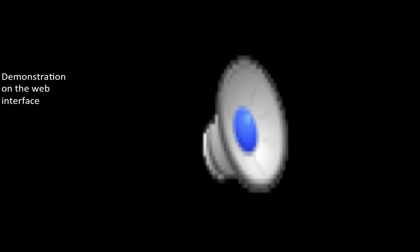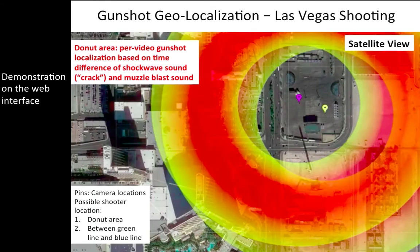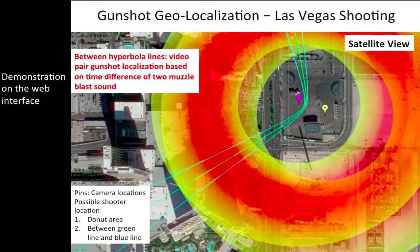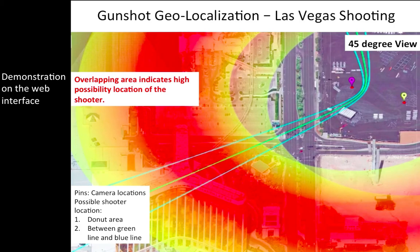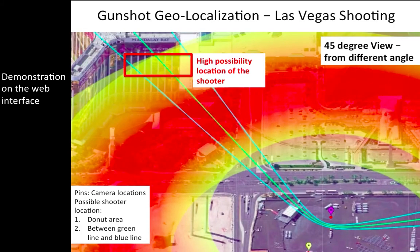Here is a demonstration on the web interface. Here we show the donut area estimation and the hyperbola direction estimation. On the interface, we can utilize the Google Maps interface, where we can see both the satellite view and the 45-degree view. Here we show the client in the web interface. Thank you.